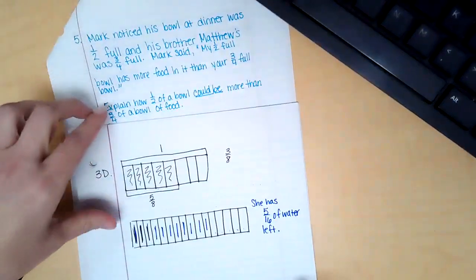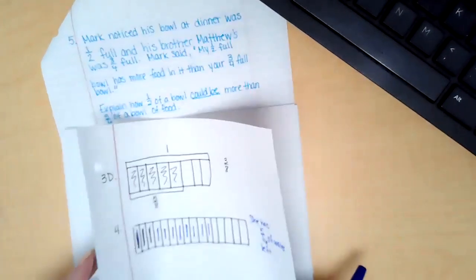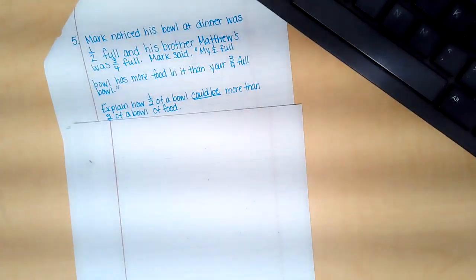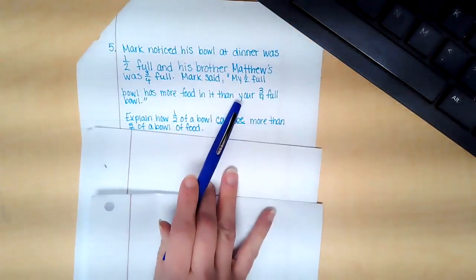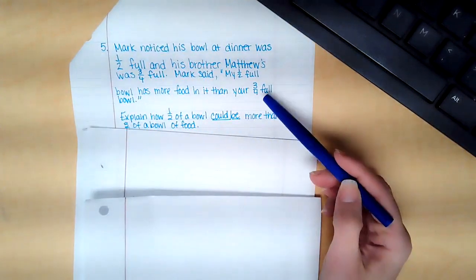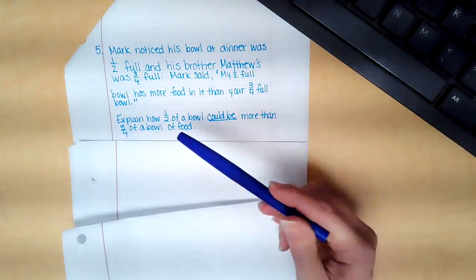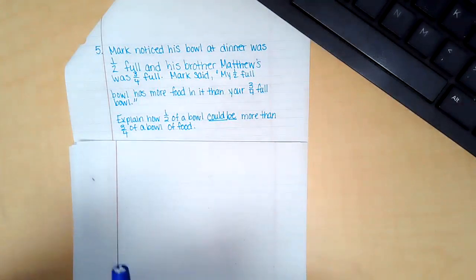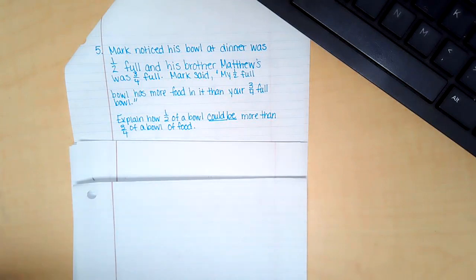Okay, let's look at another one. This one says Mark noticed his bowl at dinner was half full and his brother Matthew's was three fourths full. Mark said my half full bowl has more food than your three fourths full bowl. Explain how half of a bowl could be more than three fourths of a bowl. Okay, so let's think this through. This is kind of a reasoning one, and you know that obviously.